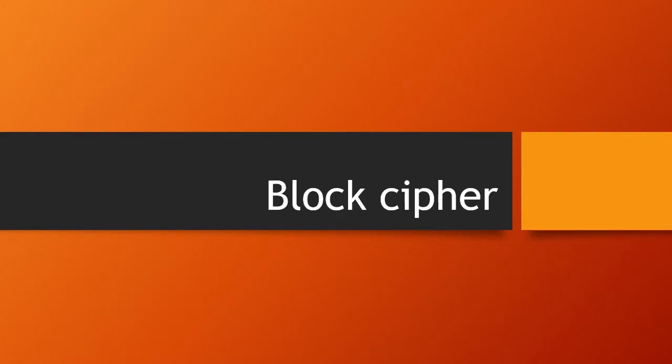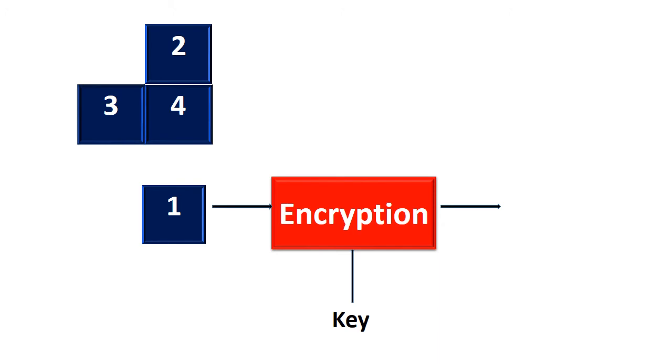Now let us understand the block cipher with a simple example. Consider the blue rectangle as a plain text. Here each cell represents one bit, so the text contains 256 bits of data. The plain text is divided into four blocks, and each block contains 64 bits.